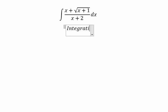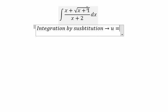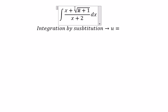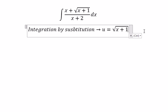We need to use integration by substitution. So we will have u equal to the square root. Later we put the square on both sides.